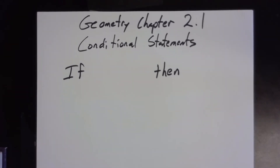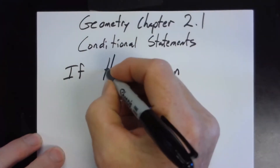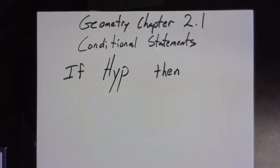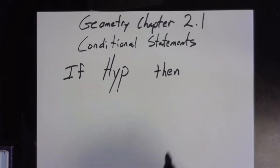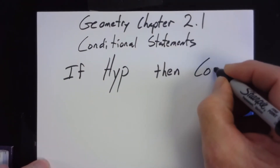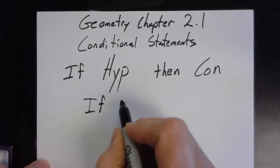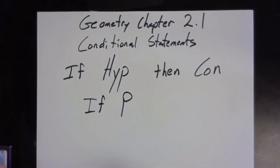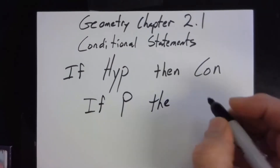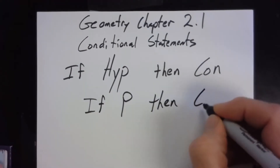Conditional statements follow this pattern: there's a hypothesis — 'if you don't clean your room,' 'if you put gas in the car,' 'if it's a bird,' 'if two lines are perpendicular' — whatever it happens to be. Then there's a conclusion. We abbreviate these: if P (the hypothesis) then Q (the conclusion).